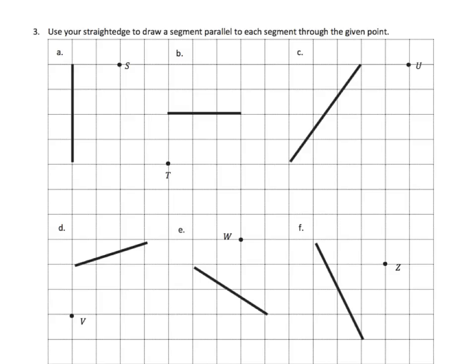Here we have to use a straight edge to draw a segment parallel to each segment through a given point. Looking at segment A, it's a perfectly vertical line, so all we have to do is use the point as a guide and create a parallel line with a straight edge. For segment B, we need to draw a horizontal line — create another line along the horizontal through point T using a straight edge.